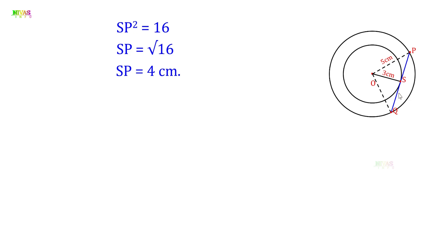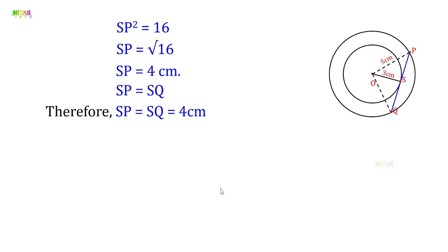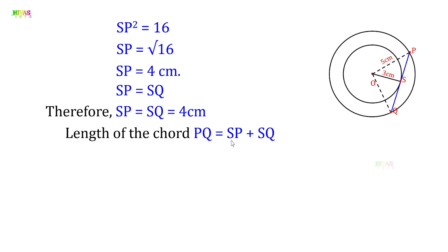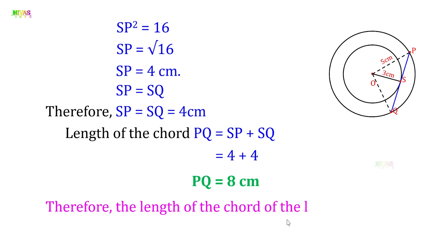So SP = 4 centimeters. Since OS is perpendicular to PQ and bisects it, SP = SQ = 4 centimeters. Therefore, the length of the chord PQ = SP + SQ = 4 + 4 = 8 centimeters. The length of the chord of the larger circle is 8 centimeters.